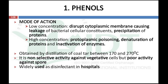The first class is phenols. Phenols kill bacteria by two mechanisms: at low concentration they disrupt the cytoplasmic membrane, causing leakage of bacterial cellular constituents and precipitation of proteins; at high concentration they kill microorganisms by protoplasmic poisoning, denaturation of proteins, and inactivation of enzymes. Phenol disinfectants are usually obtained by distillation of coal tar between 170–270°C. They are non-selectively active against vegetative forms of bacteria but poorly active against spore-forming bacteria.